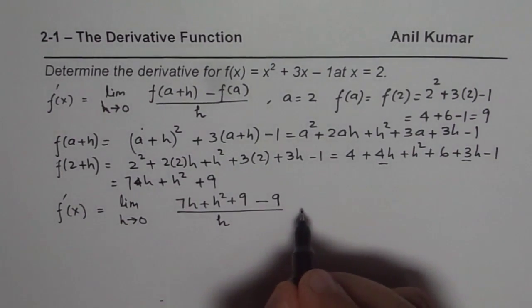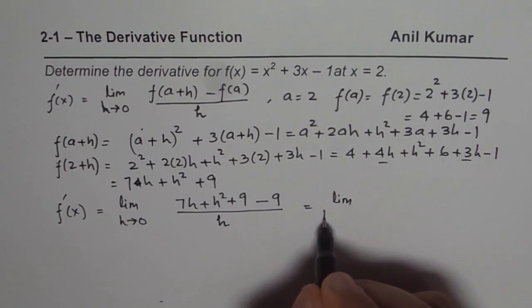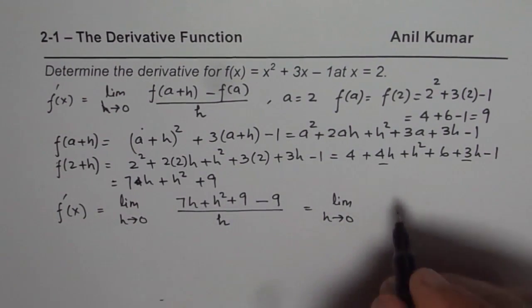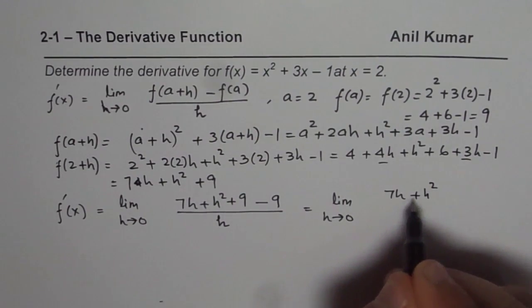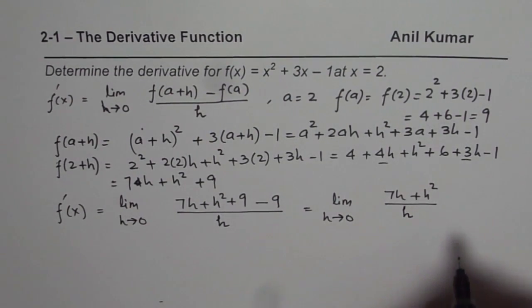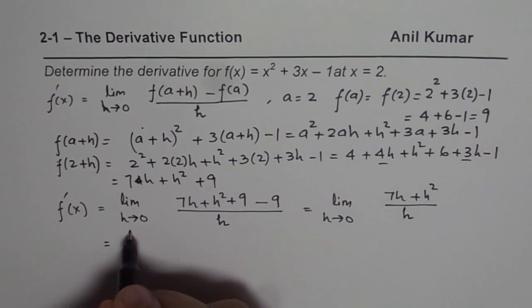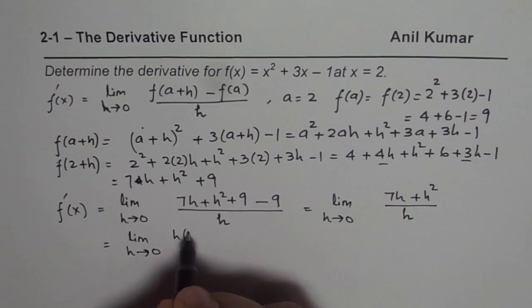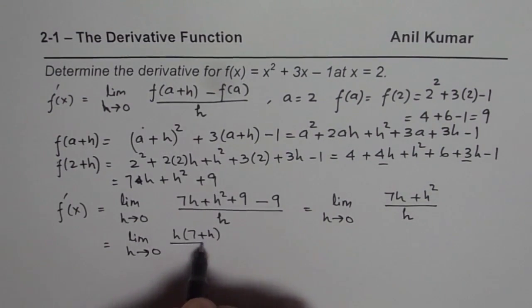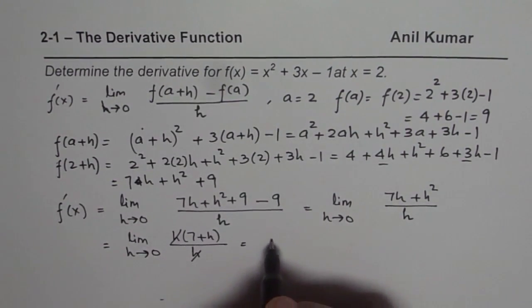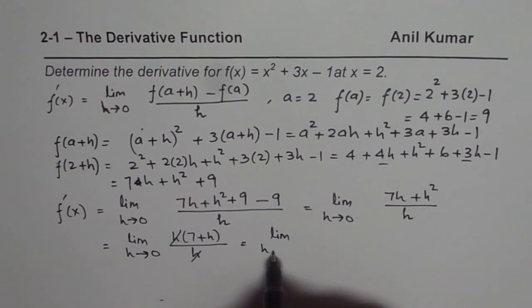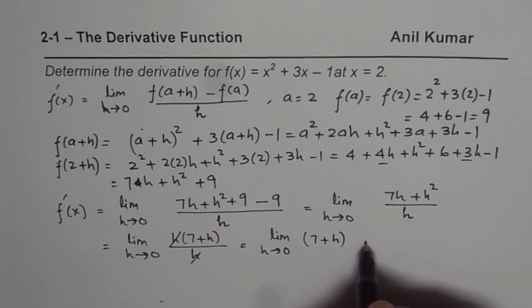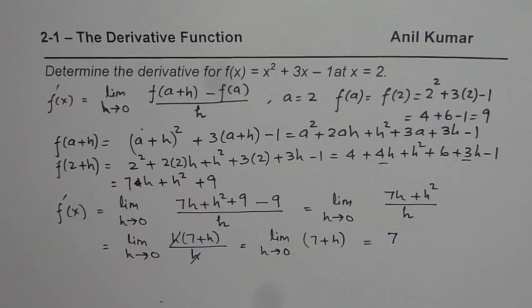Now that is equals to limit h approaches 0, 7 h plus h square, since 9 minus 9 is 0, so we get 7 h plus h square over h. Now we can take h common and write this as limit h approaches 0, if I take h common, I get 7 plus h over h. h and h cancel out, so we are left with limit h approaches 0 of 7 plus h. You can substitute h as 0, and then get 7 as your answer.